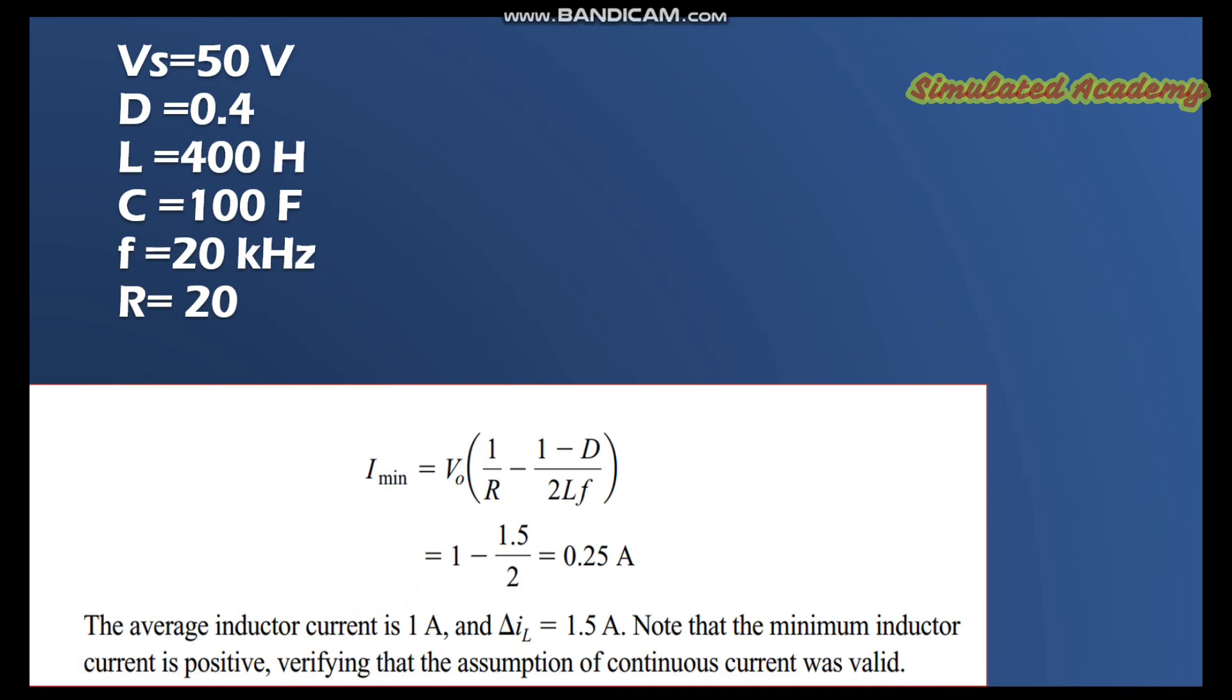The minimum current would come out to be 0.25. If you take the average of the maximum and minimum current, the average current would come out to be 1 ampere and the change in current is 1.5 amperes.